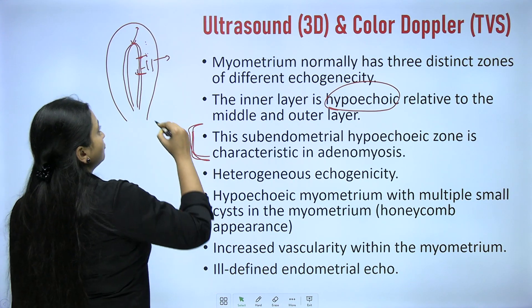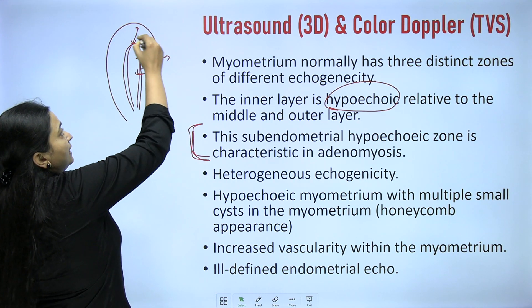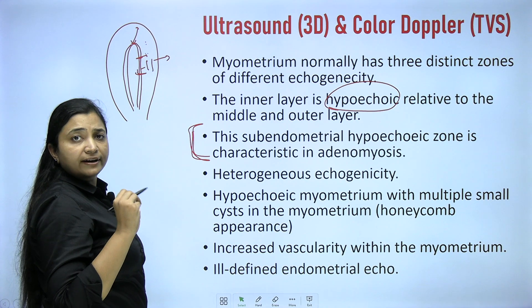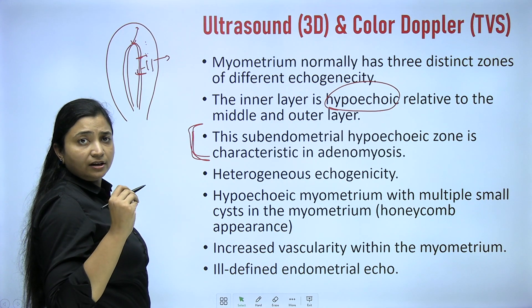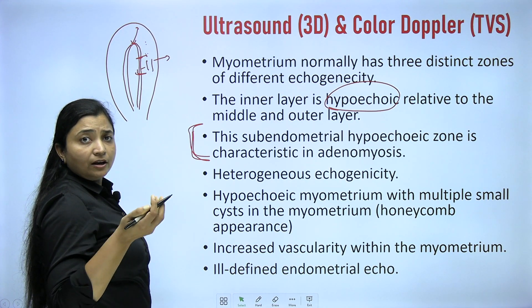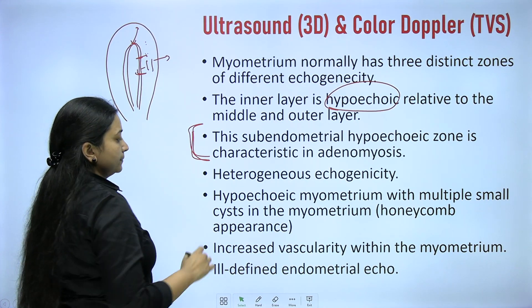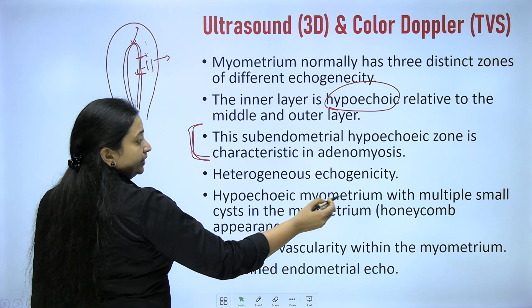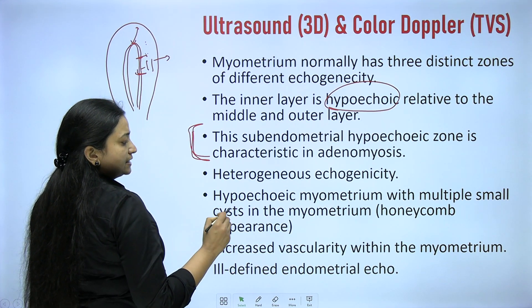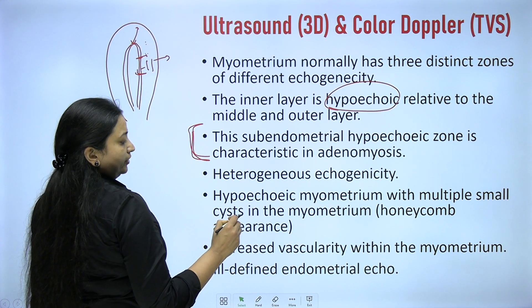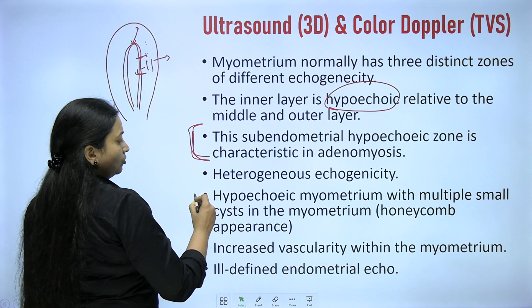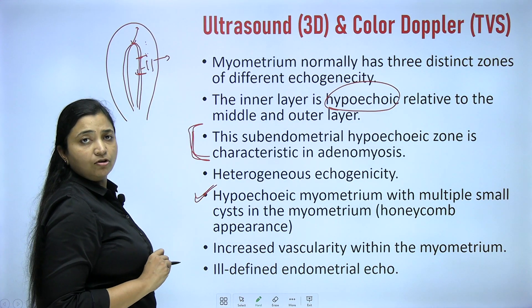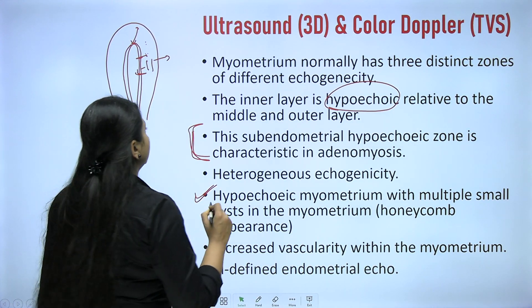Heterogeneous echogenicity means the echogenicity is not smooth — somewhere it is hyperechoic, somewhere it is hypoechoic. Hypoechoic myometrium with multiple small cysts in the myometrium, giving a honeycomb appearance, is also a very specific sign of adenomyosis.